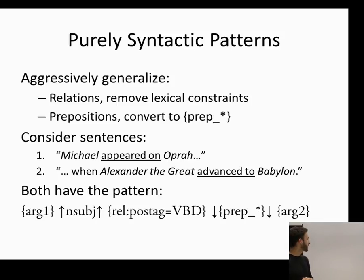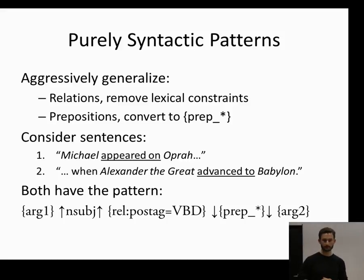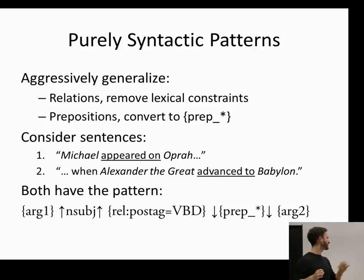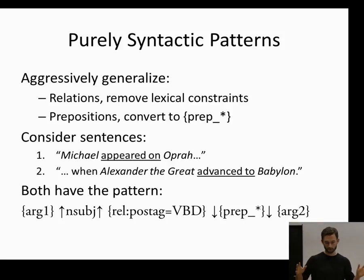Here's an example of a syntactic pattern: two sentences match the same pattern — argument, noun-subject edge, VBD (verb past tense), preposition, argument. For purely syntactic patterns, we aggressively generalize. In contrast to WOE, which generalizes in almost any case, OLLI only generalizes when all four conditions are met. For relations we remove all lexical constraints; for prepositions we convert to 'prep-star' to match any preposition; and arguments are never used as part of a constraint.